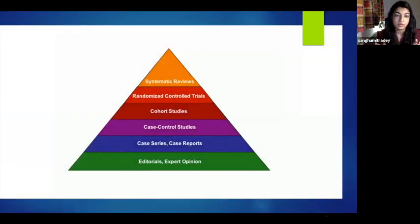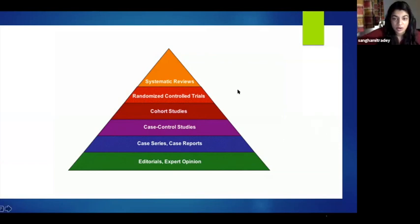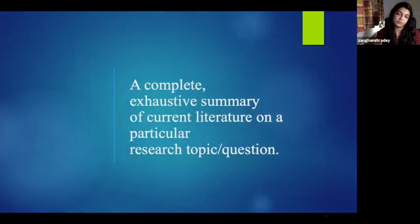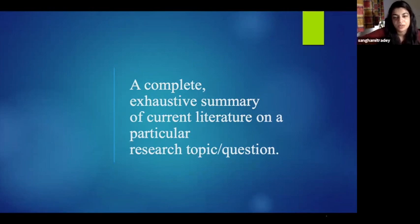This is the pyramid of all the kinds of studies and research papers that you can write and publish. As you can see, systematic reviews are at the top of that pyramid. A very simple way of putting it would be that it's a complete and exhaustive summary of all the current literature that is published or present on your particular research topic or question.